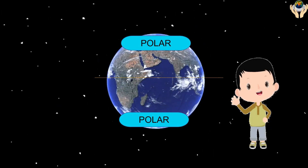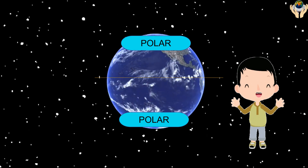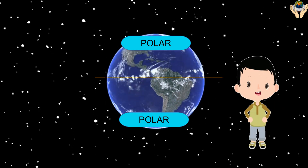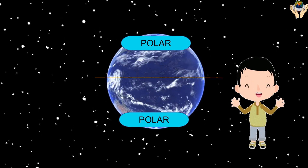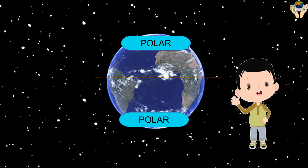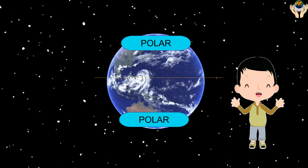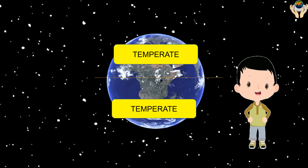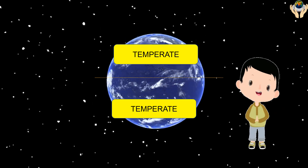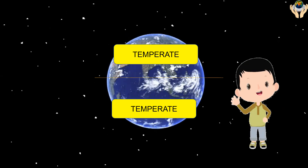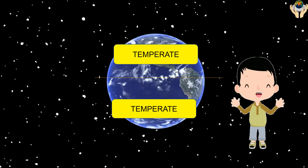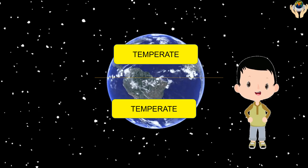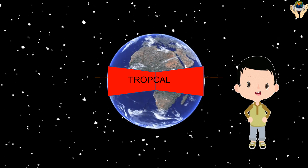The polar climate zone is extremely cold — even in summer, temperatures here never go higher than 10 degrees Celsius. The temperate zone typically has warm and humid summers with thunderstorms, and mild winters.